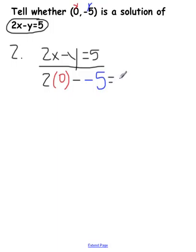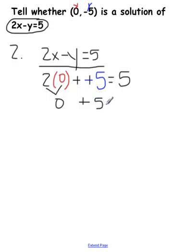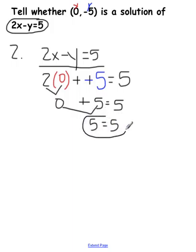Copy everything else down — equals 5. Before PEMDAS, I don't like subtraction, so I need to fix this. The last one was a plus minus; this one is a plus plus. Now do PEMDAS: multiply first, 2 times 0 is 0. Copy everything else down. Then 0 plus 5 is 5. Is (0, negative 5) a solution to this equation? It worked, so yes, it is a solution.